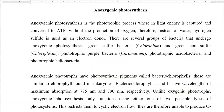Anoxygenic photosynthesis is a phototrophic process which requires light energy and converts it into ATP — that is chemical energy — without production of oxygen. Therefore, instead of water, which is the electron donor in the oxygenic group of organisms such as cyanobacteria, the anoxygenic group of organisms uses hydrogen sulfide as an electron donor.